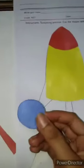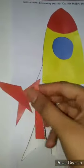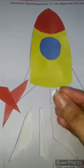After that, this blue color circle, which will come in the middle of the rocket and place it over here. Then these three parts.